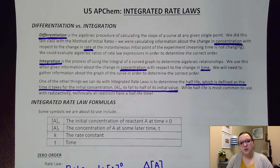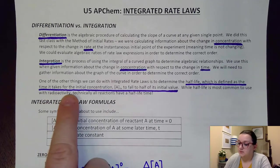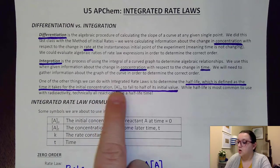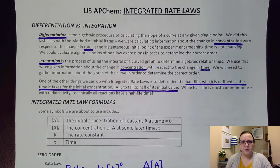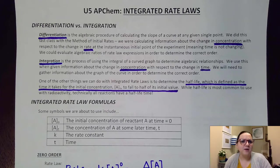One of the other things that we're going to start to talk about here is the idea also of half-life. Half-life is defined as the time it takes for the initial concentration to fall to half of its initial value. You might be familiar with half-life from pre-AP chemistry when we discussed radioactive decay, or from your math class if you calculated and looked at formulas with it.